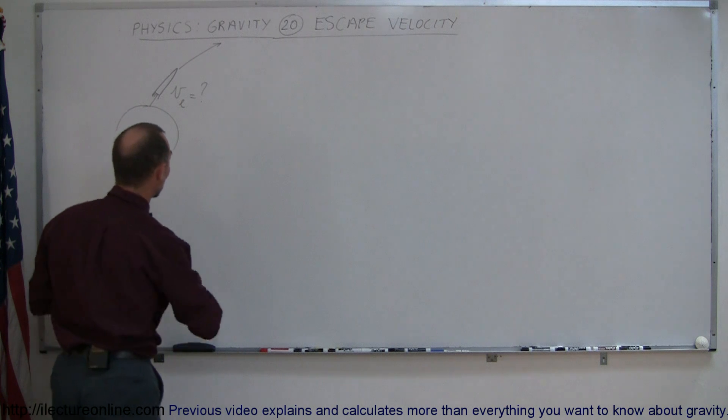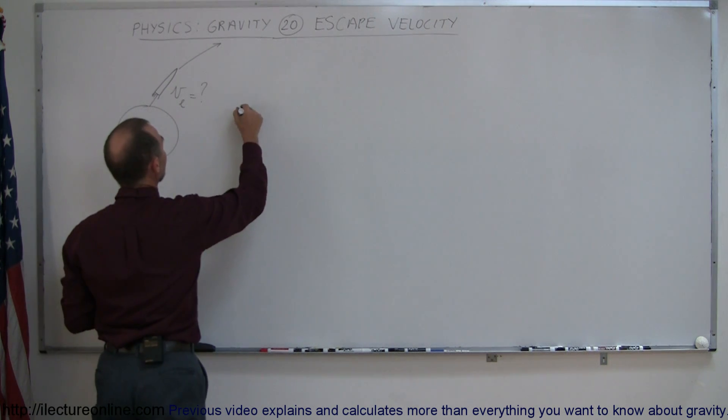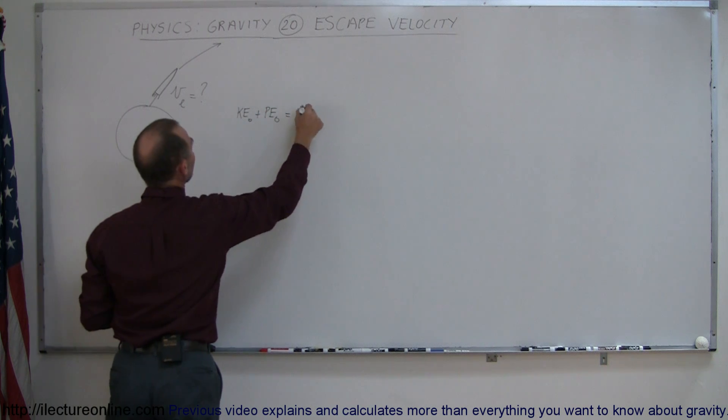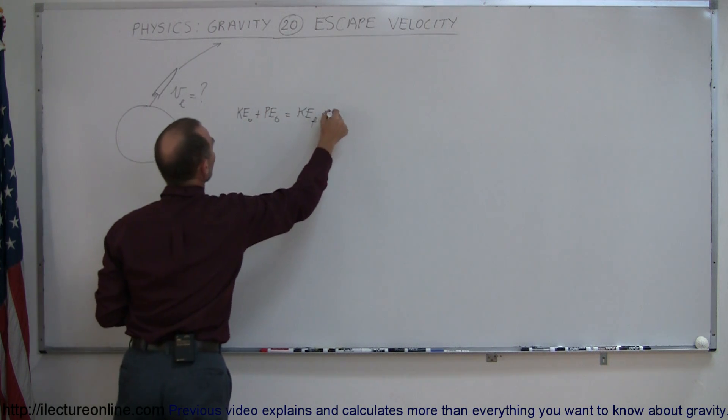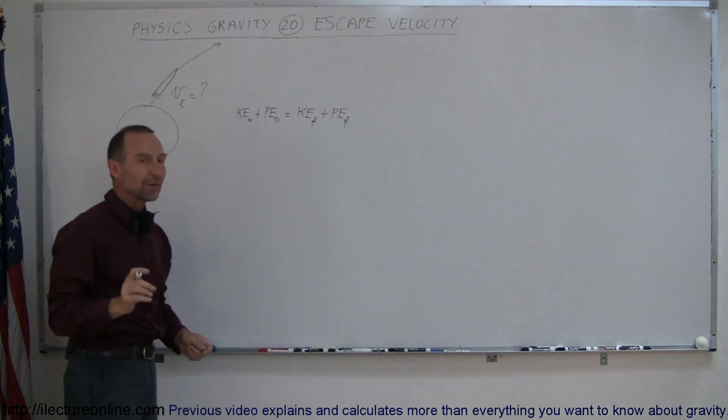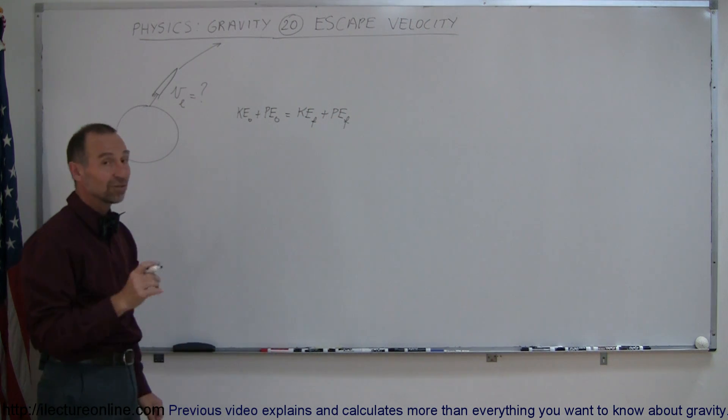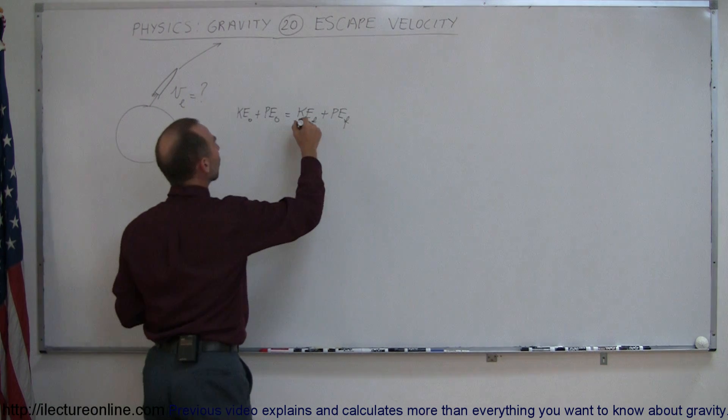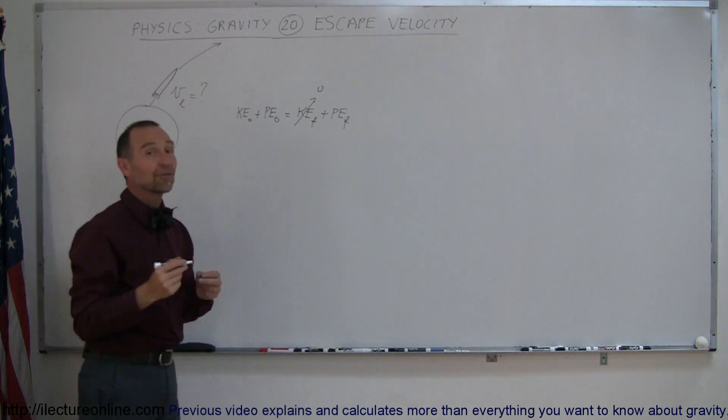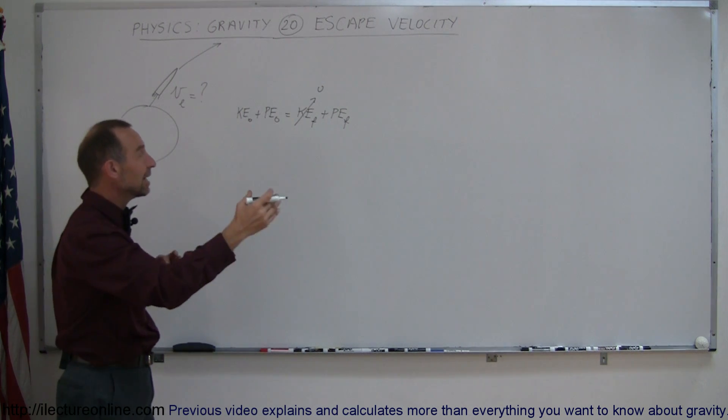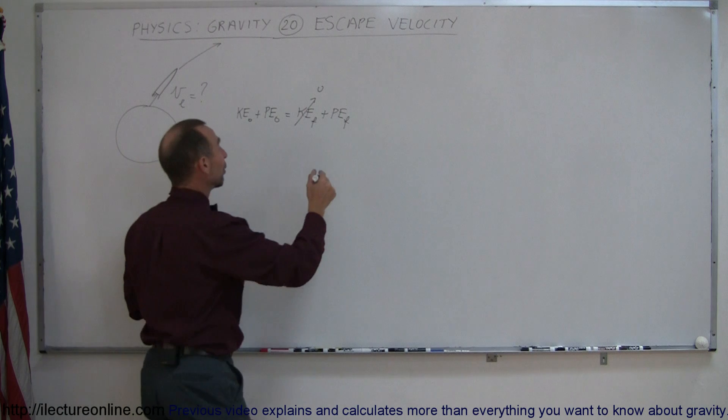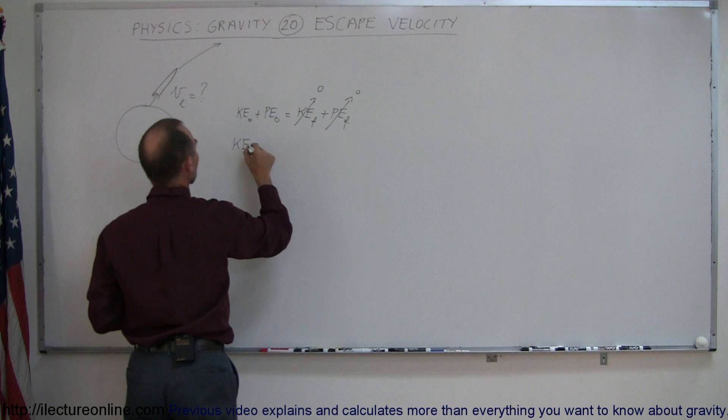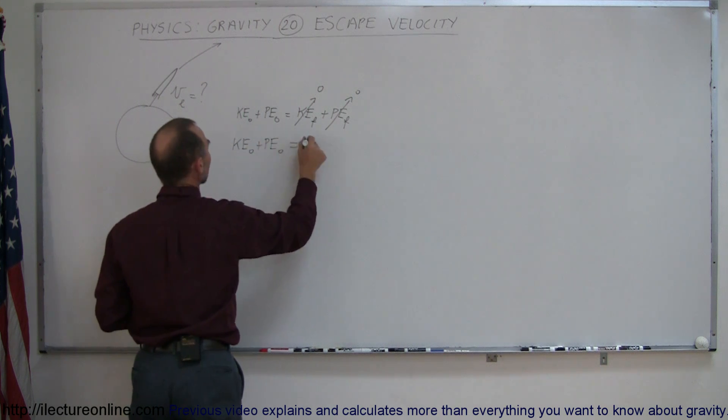The way you do that is using the energy equation that the kinetic energy initial plus the potential energy initial equals the kinetic energy final plus the potential energy final. Since we're looking for the very minimum velocity required to escape, the escape velocity, we can say by the time it reaches an infinite distance, all the kinetic energy will have gone to zero. And by definition, when your distance is at infinity, potential energy at that point is also equal to zero. So what we then have to say is that the kinetic energy initial plus the potential energy initial equals zero.